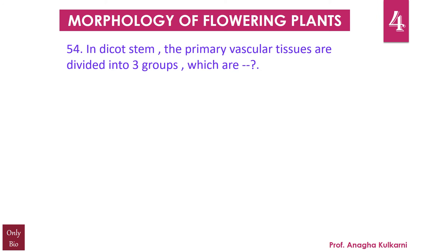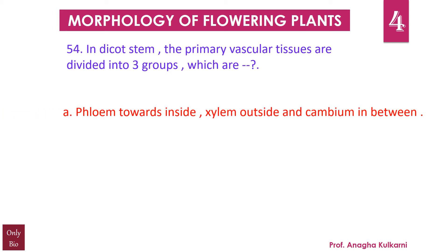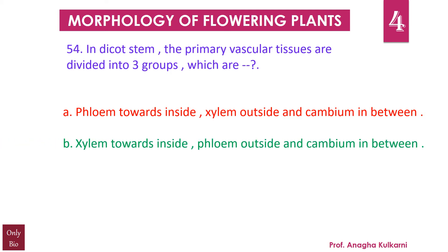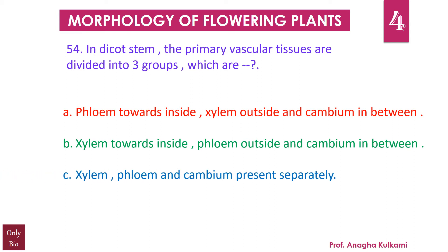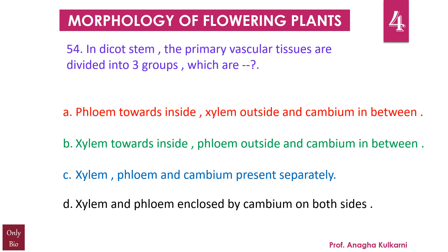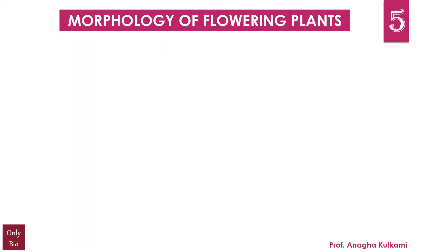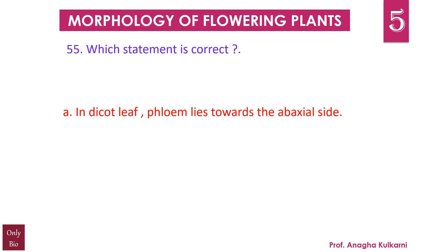Question number 54: In dicot stem, the primary vascular tissues are divided into three groups — a) phloem towards inside, xylem outside, and cambium in between; b) xylem towards inside, phloem outside, and cambium in between; c) xylem, phloem, and cambium present separately; d) xylem and phloem enclosed by cambium on both sides. The correct answer is b) — xylem towards inside, phloem outside, and cambium in between.